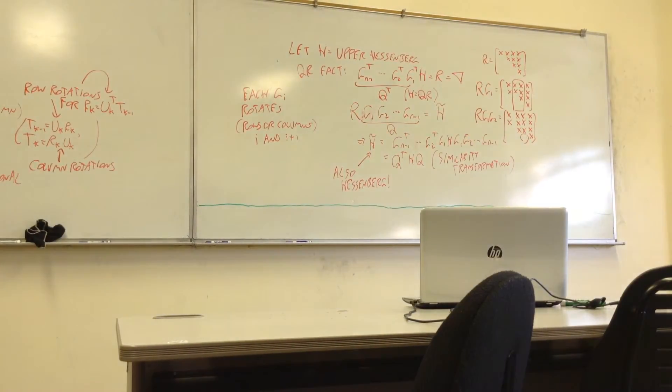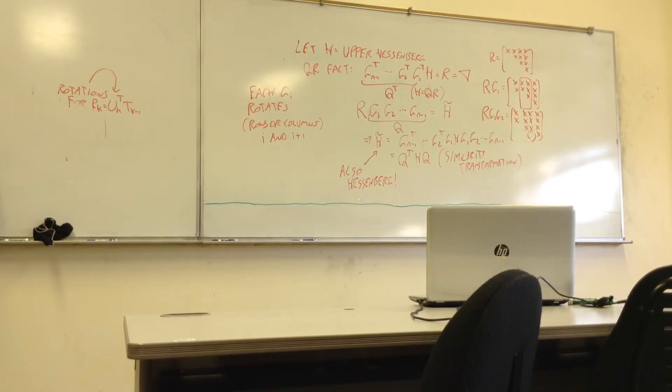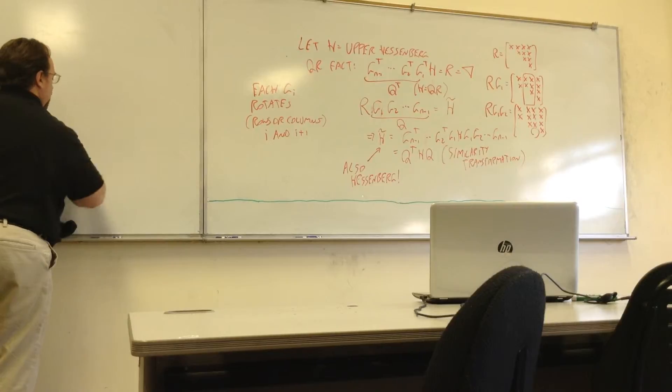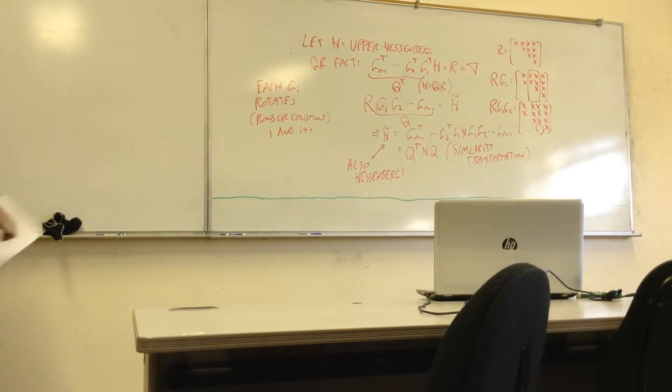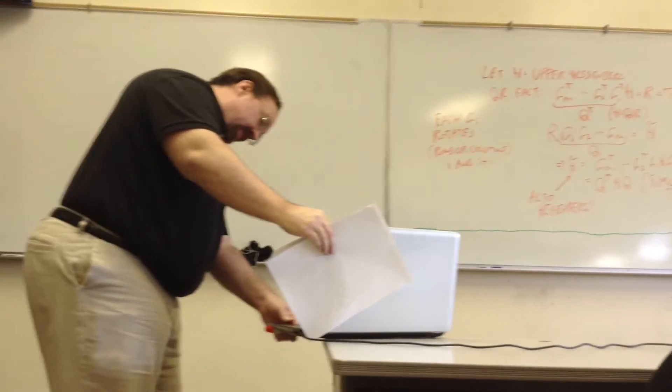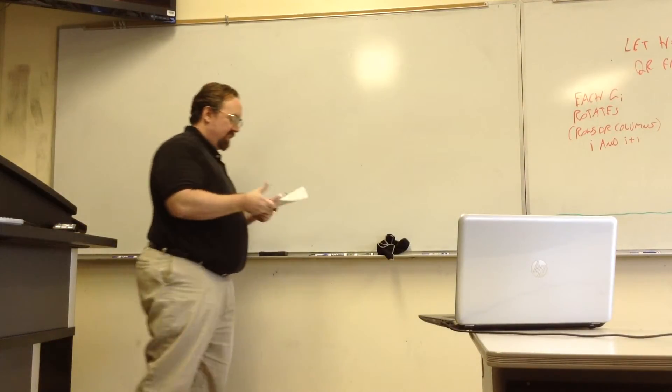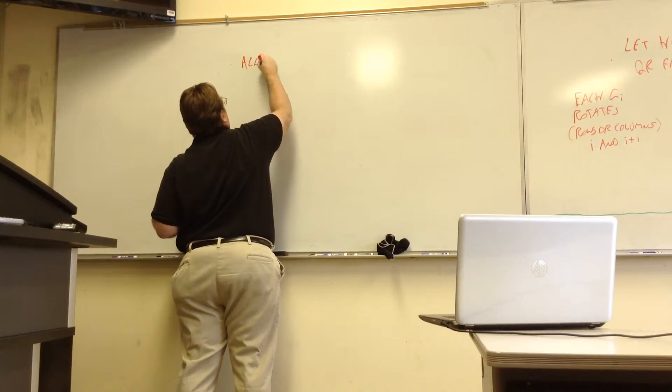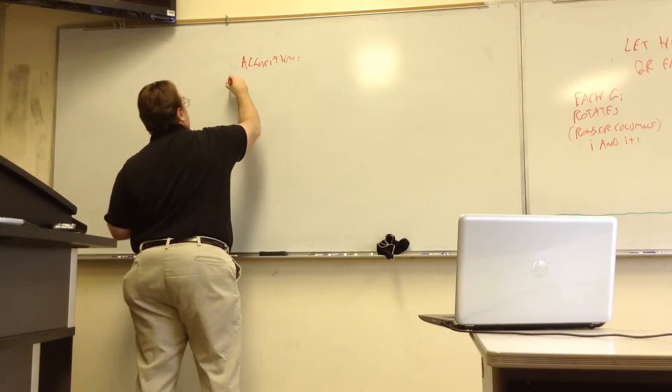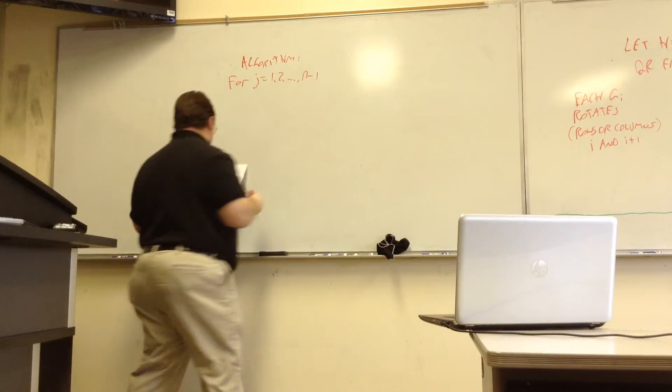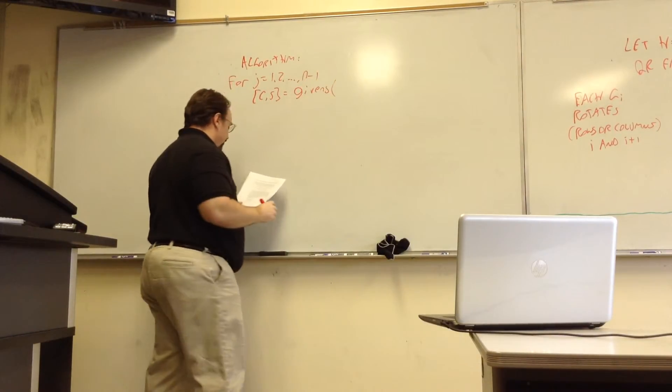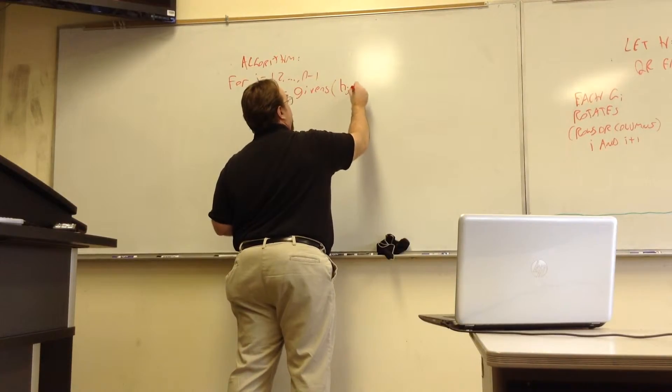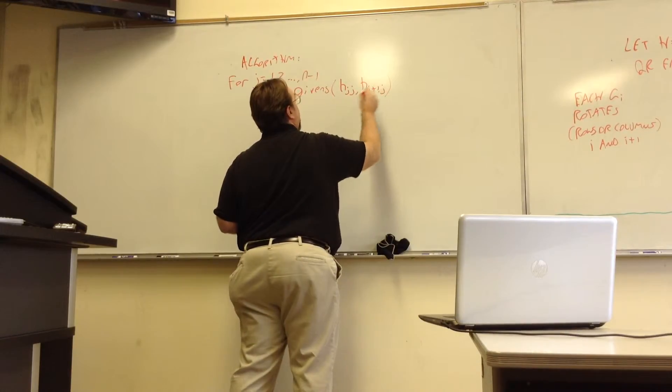So now we'll take a look at a MATLAB-like algorithm for carrying all this out. So, the actual algorithm for doing this, we loop over each column, 1 up to n minus 1. We form a Givens rotation, so we need a cosine-sine pair, so we can use the givens function for that, like the one I posted on the side. And that's when you use the diagonal entry of your Hessenberg matrix and a sub-diagonal entry in the same column.